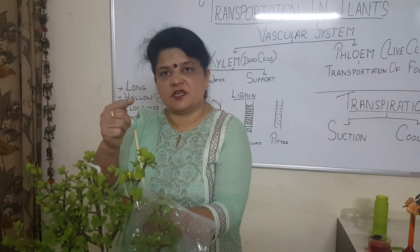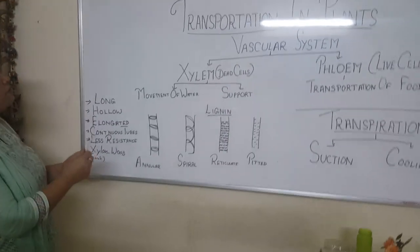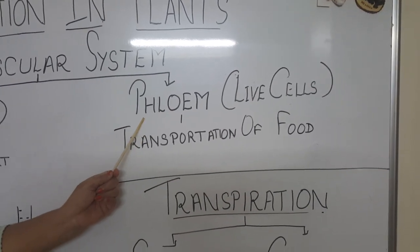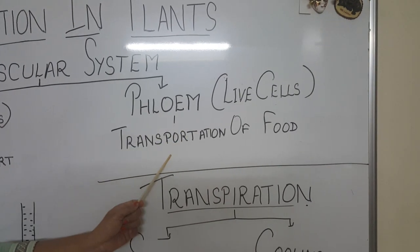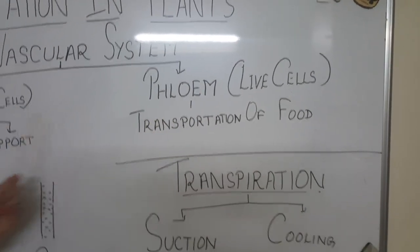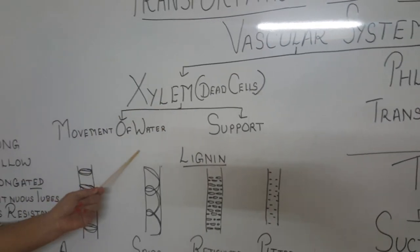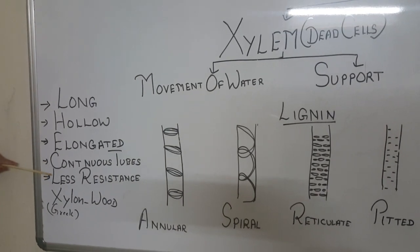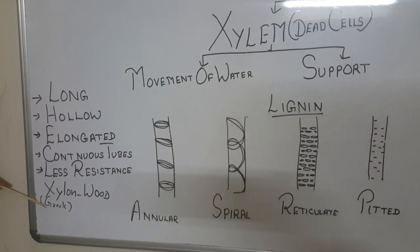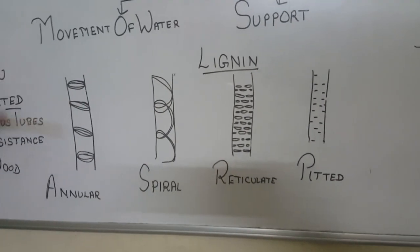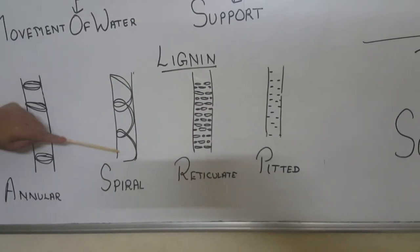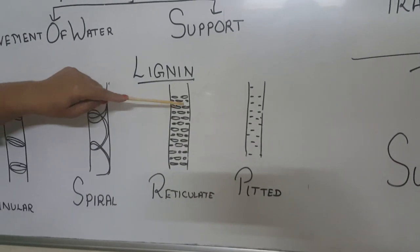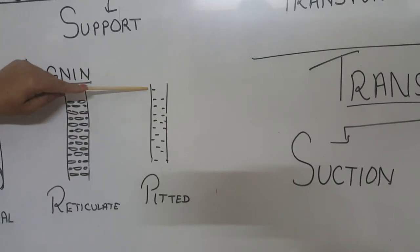Xylem are dead cells, as I told you. Phloem are the living cells. Phloem carries food — phloem and food both begin with 'ph'. Xylem moves water only in the upward direction, and also gives support to the plant. It is hollow, elongated, continuous tubes with less resistance. Xylem is a Greek word meaning wood. There are four types of lignin patterns in xylem: annular (rings), spiral, reticulate, and pitted. Transpiration causes suction pull and has a cooling effect on the plant.